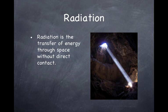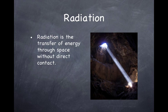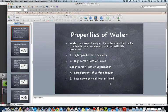Radiation is another way to transfer energy — it is the transfer of energy through space without direct contact. The best example is light. Light travels from the sun all the way to earth and heats it up. There is no direct contact between the earth and the sun, but there is radiated energy that travels from the sun to the earth. And that concludes our discussion of the properties of water and heat transfer.